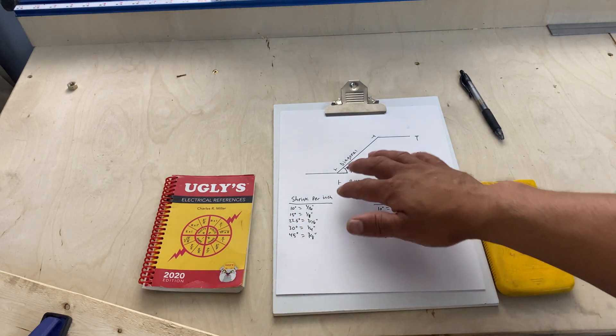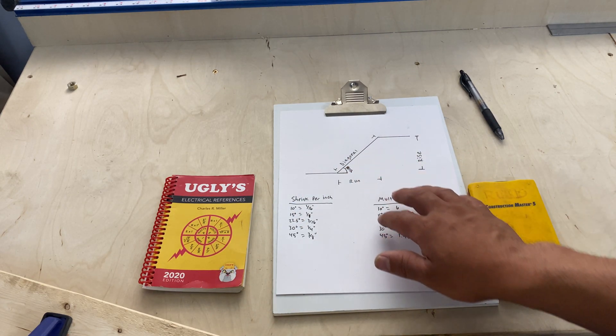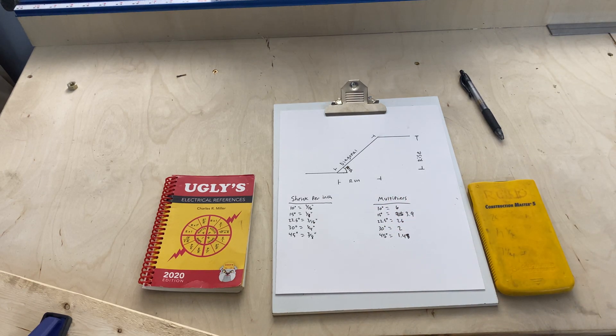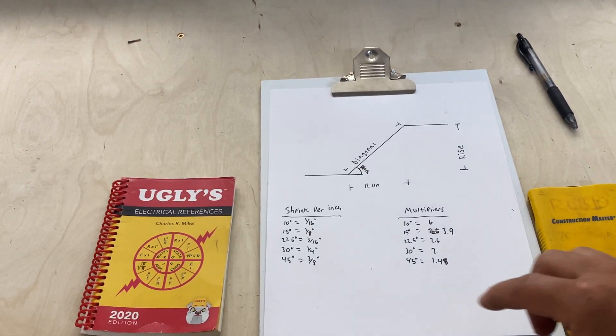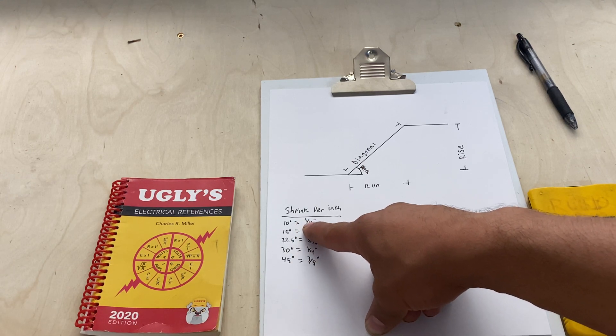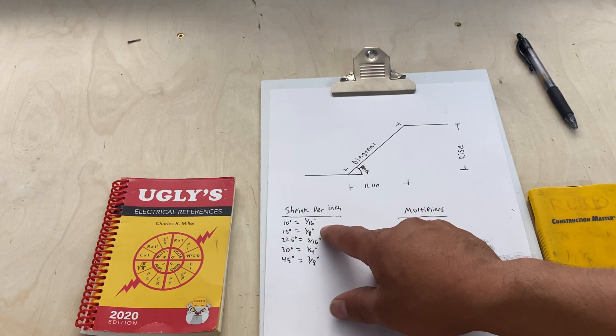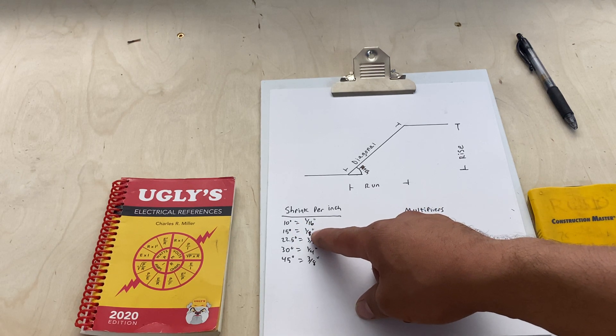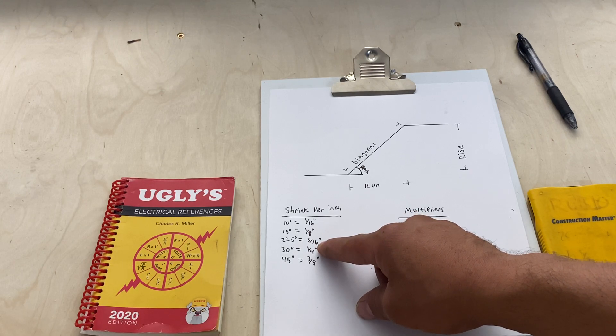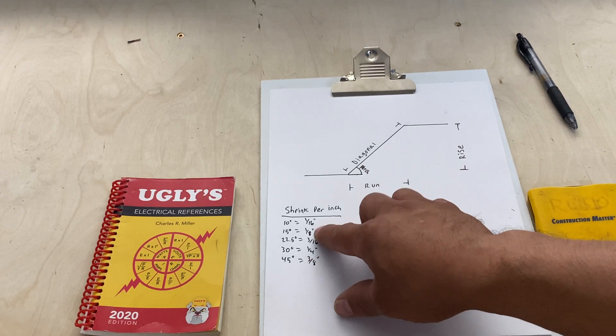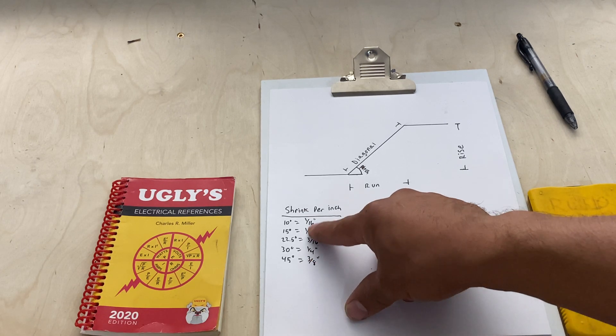Here I just drew a little diagram and put some descriptions on there with your shrinkage and your multipliers. Let me zoom in real quick. Down here on the left I have your shrinkage per inch. For every degree of bend it has different shrinks per inch. At 10 degrees you'll have a sixteenth inch per inch, 15 is an eighth of an inch, 22.5 is 3/16, 30 is a quarter, and 45 you have three-eighths. That's per inch, so if you're doing two inches you multiply these times two, three, four, five, and so on.